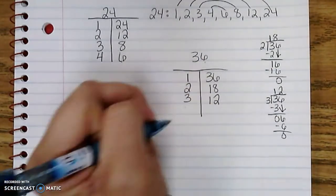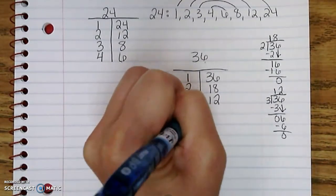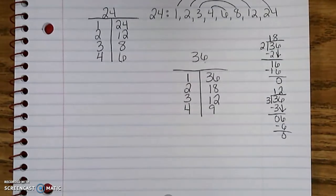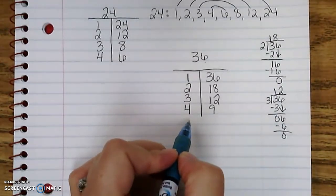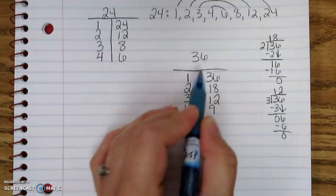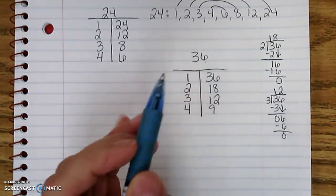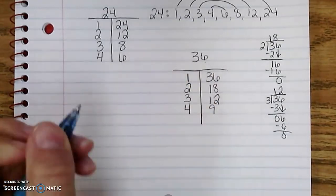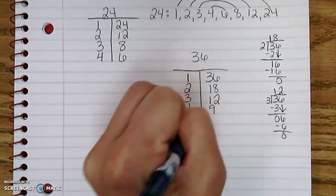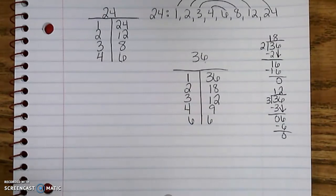Then I think about 4. Is 4 a factor of 36? Yes, 4 times 9 is 36. Is 5 a factor of 36? Well, products of 5 have to end in 5 or 0, and that's a 6, so no. Is 6 a factor of 36? Yes, because 6 times 6 equals 36.